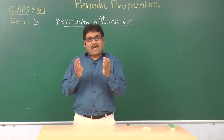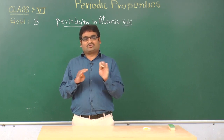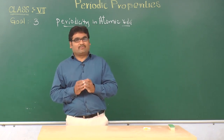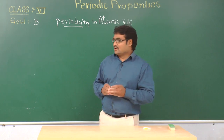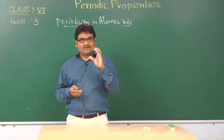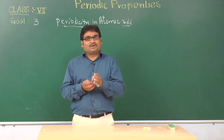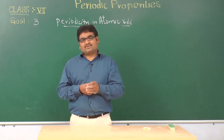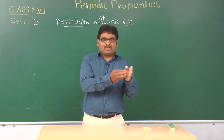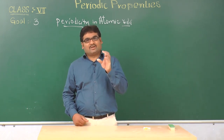First, let us see what happens to the size of the atom when we move across the period from left to the right side. When we move from left to the right, the atomic size decreases because the distinguishing electron enters into the same shell, and this keeps on repeating as we keep on moving from left to the right side of the periodic table, and the electron is added into the same orbital.